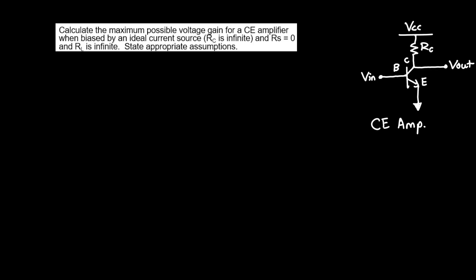Calculate the maximum possible voltage gain for a common emitter amplifier when biased by an ideal current source in which RC is infinite, RS is zero, and RL is also infinite. State appropriate assumptions.